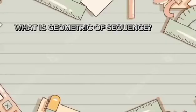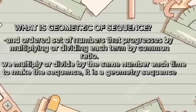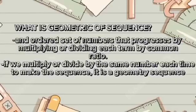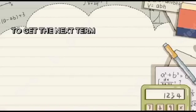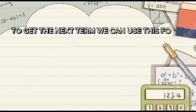So what is Geometric Sequence? Geometric Sequence is the ordered set of numbers that progresses by multiplying or dividing each term by a common ratio. If you multiply or divide by the same number each time to make the sequence, it is called Geometric Sequence. To get the next term, we can use this formula.